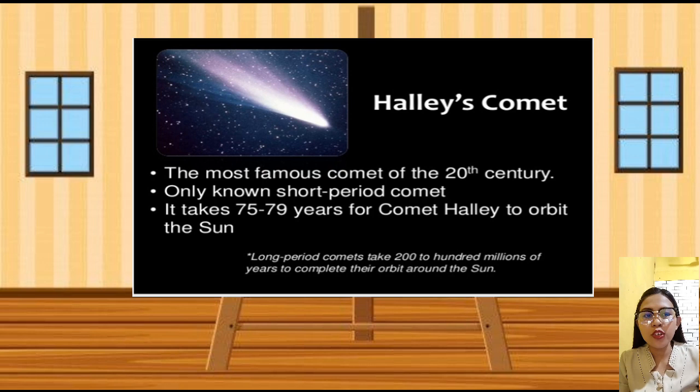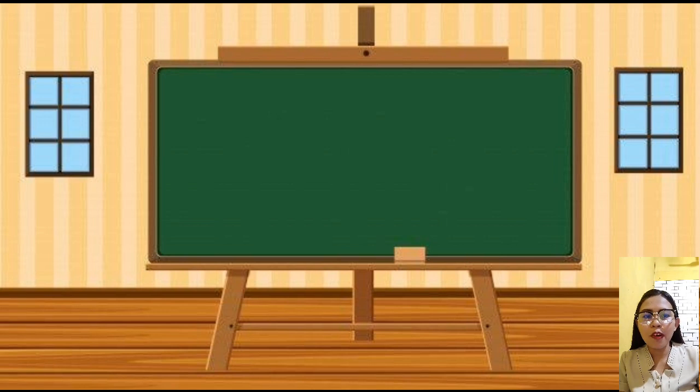also known as a short-period comet, since it takes 75 to 79 years for comet Halley to orbit the sun. Take note that the long-period comets take 200 to 100 millions of years to complete their orbit around the sun.